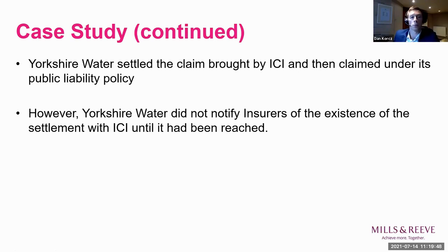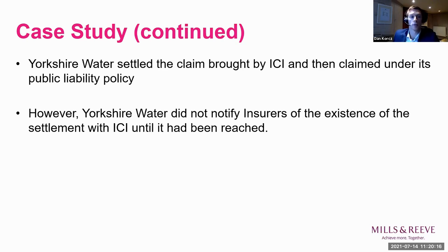Yorkshire Water settled the claim brought by ICI and then asked their public liability insurers to indemnify them under the mitigation of loss clause. To support this claim for indemnity, Yorkshire Water informed its insurers that the effect of the settlement with ICI meant that liability was established for the purpose of the policy. Yorkshire Water claimed it was entitled to recover any compensation payable to ICI and others, as well as the cost of the works from insurers. However, Yorkshire Water didn't notify its insurers of the existence of the settlement with ICI until after it had been reached, but claimed that the insurers did not engage in negotiations with ICI when they were approached.